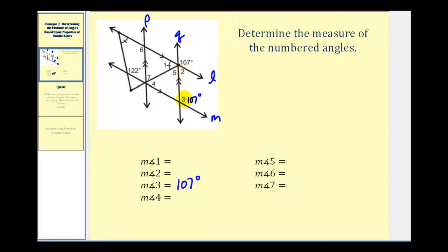Angle two and angle three are consecutive interior angles, or same-side interior angles, which means they're supplementary. So the measure of angle two plus the measure of angle three must equal 180 degrees, which makes the measure of angle two 73 degrees.